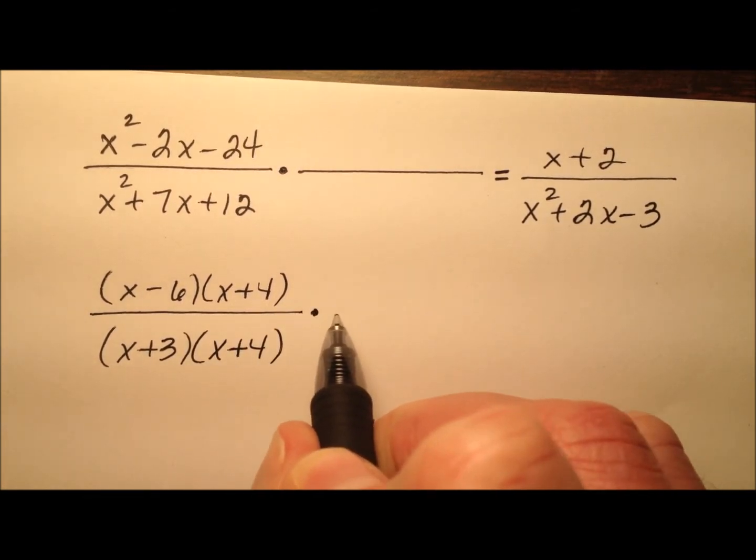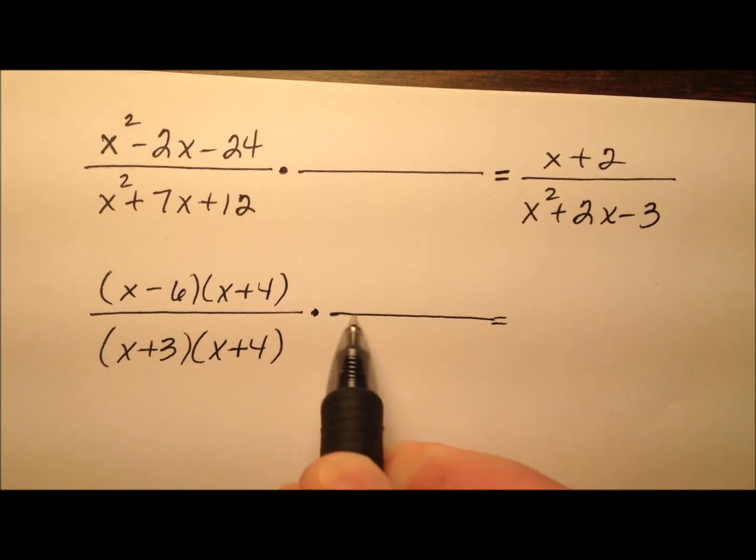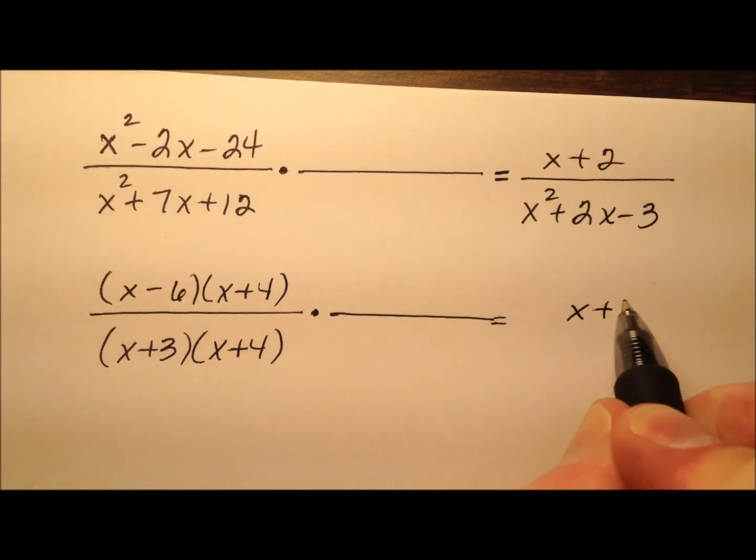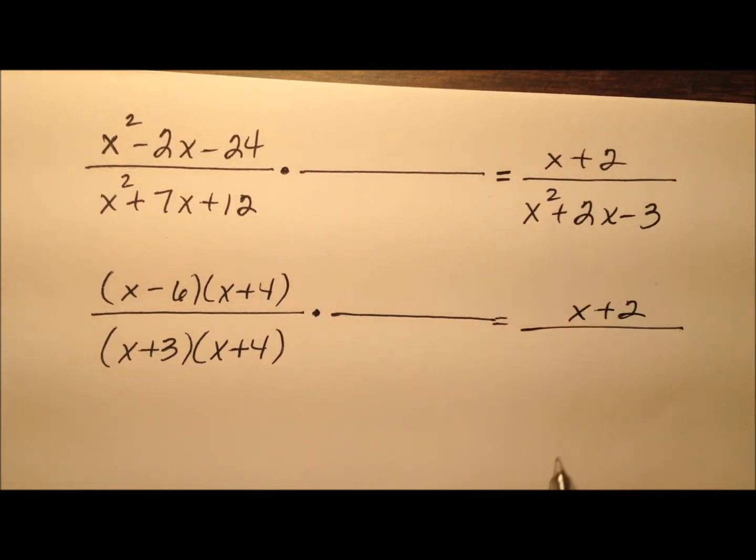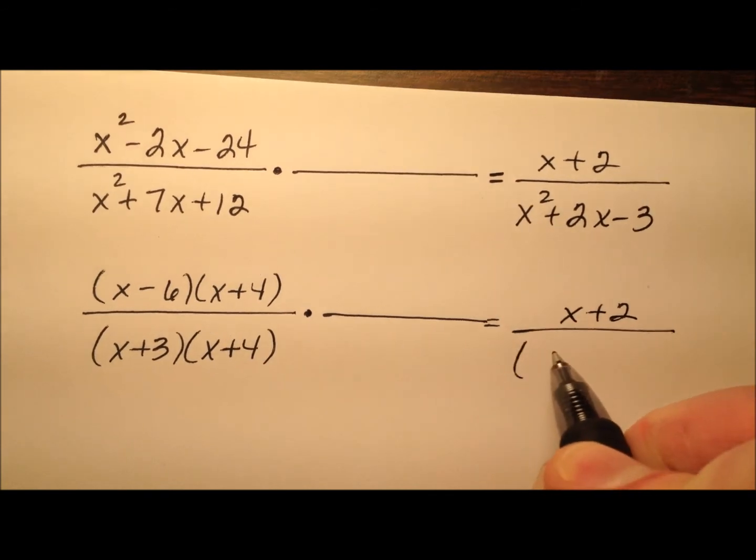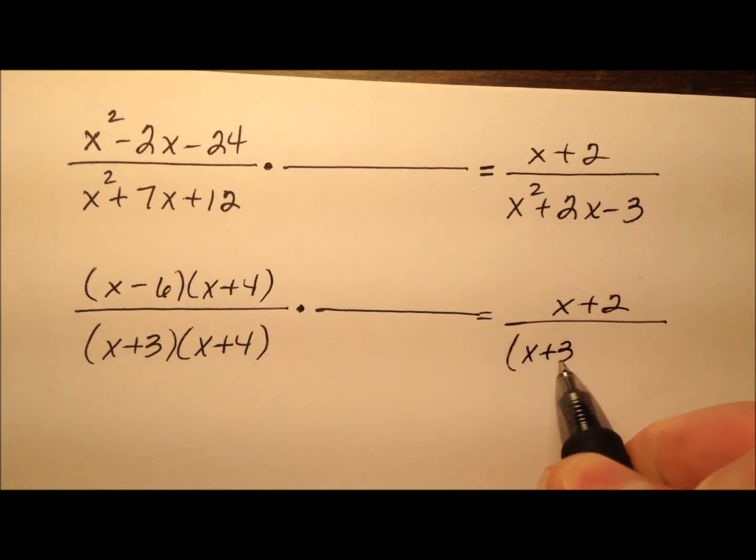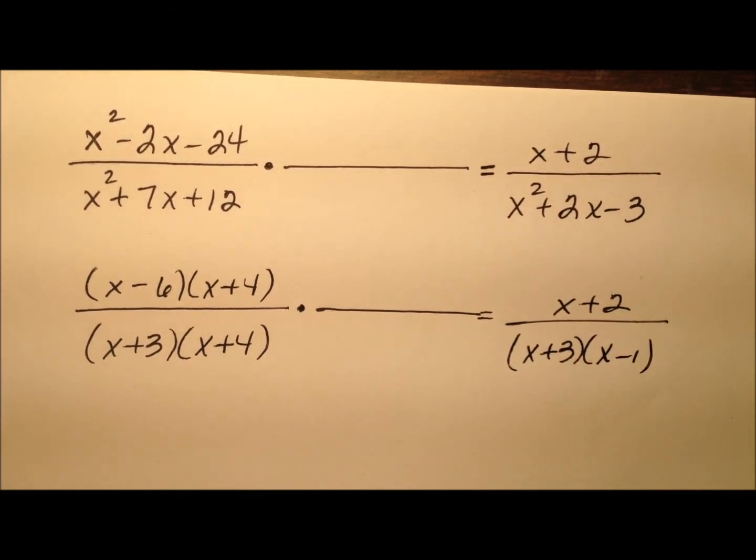I have something here I don't know yet, and then over here in the numerator x plus 2, and the denominator looks like x plus 3 and x minus 1.